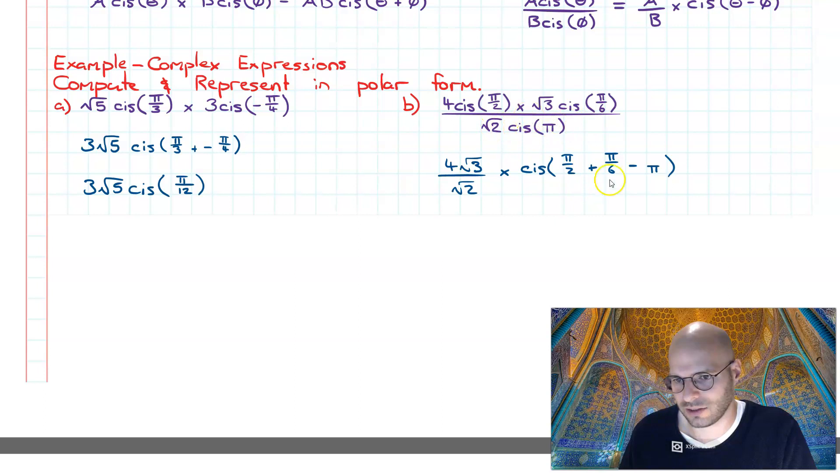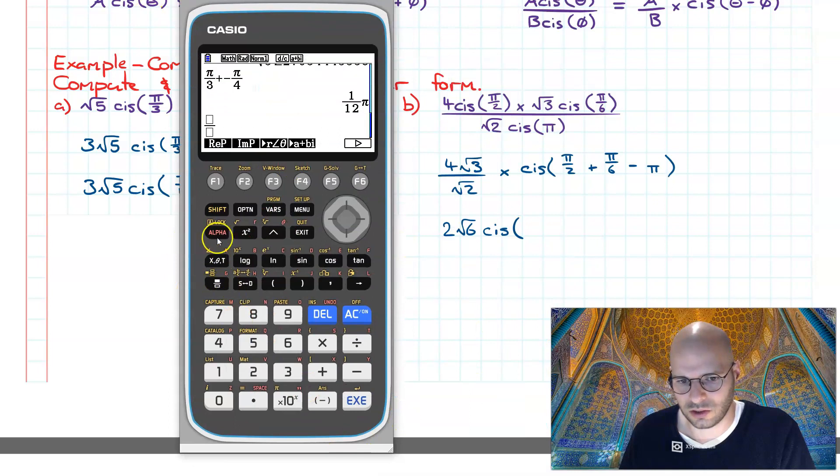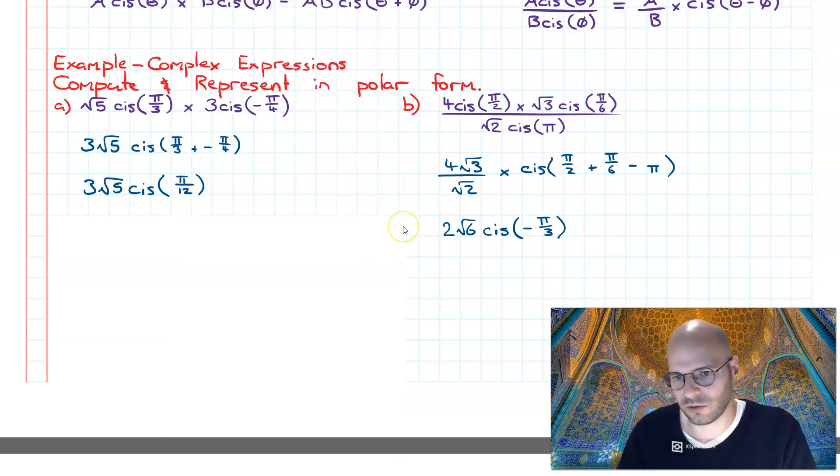Simplifying this out, what we find is that we get four root three over root two, which is going to be two root two root three. And I don't like having the root two and the root three like this, so I can simplify that down to two root six cis. And then let's crunch this one in our calculators. So pi on two plus pi on six minus pi is equal to negative pi on three. So therefore we have simplified expressions a and b.